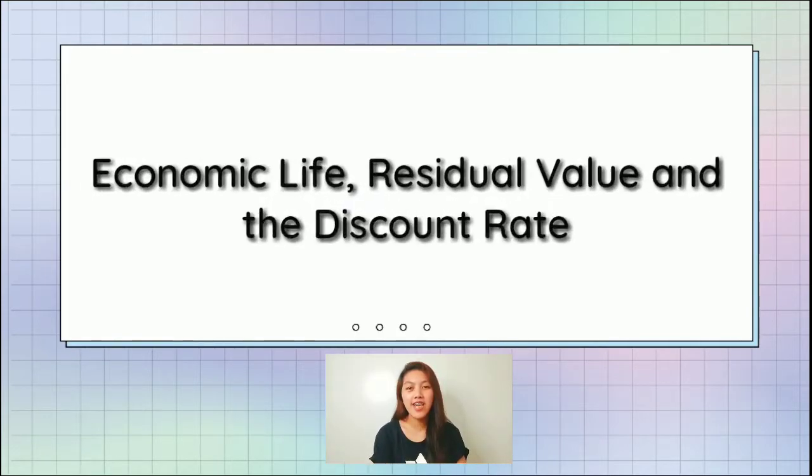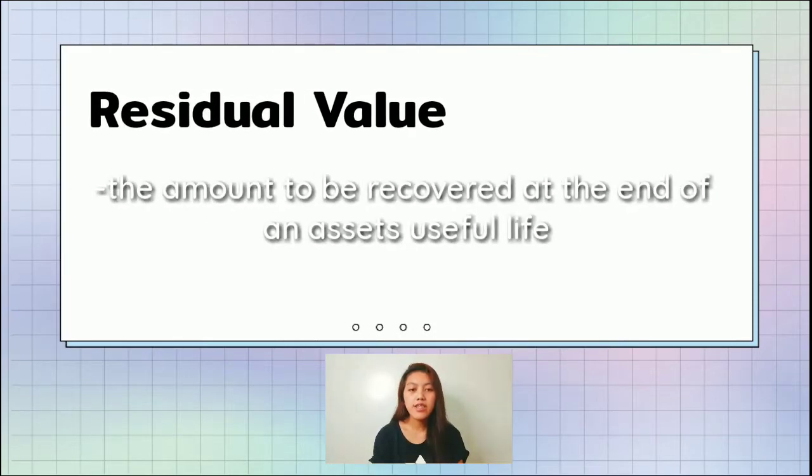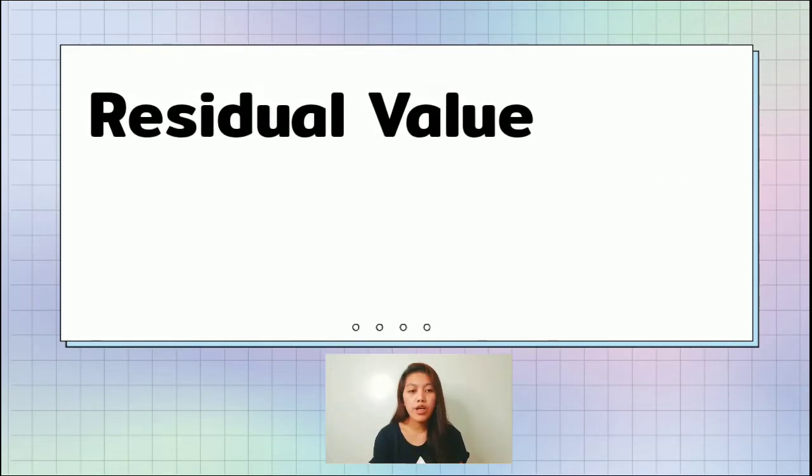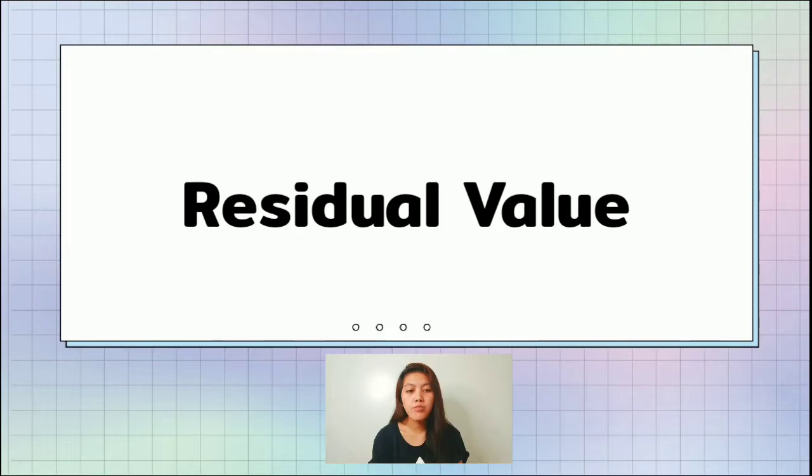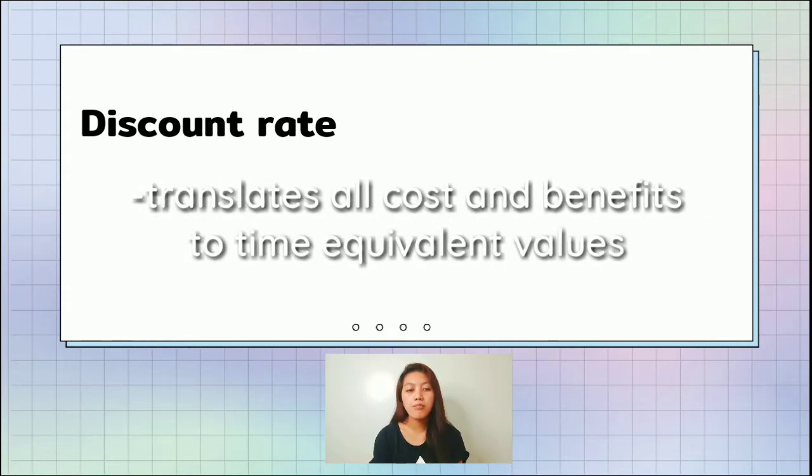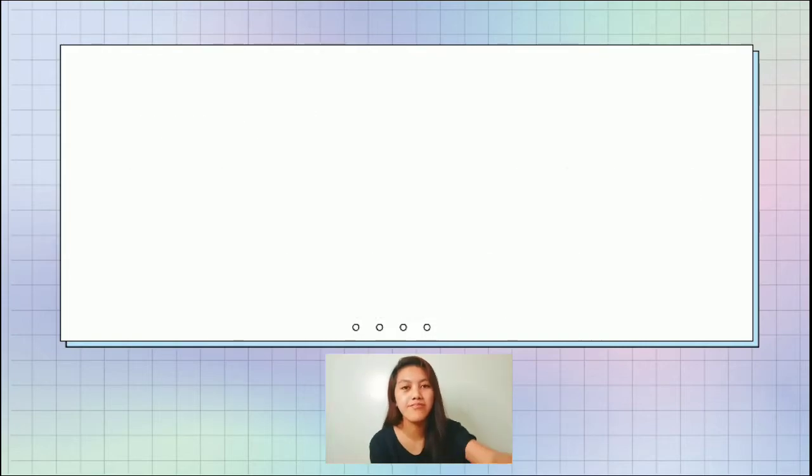Our next discussion is the economic life, residual value, and the discount rate. Residual value is also called the salvage value or scrap value. It is the amount to be recovered at the end of an asset's useful life. When we are talking about residual value, we are thinking about the property plan, typically fixed assets or depreciable assets. On the other hand, discount rate translates all costs and benefits to time equivalent values. It is a collective discount rate reflecting a project's benefit to a large number of people and spanning a timeframe greater than one full generation.